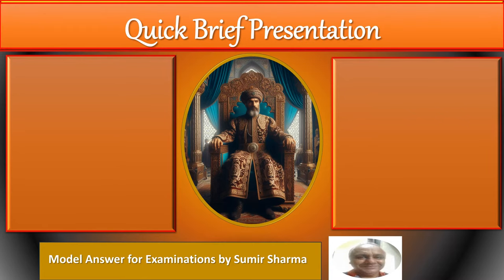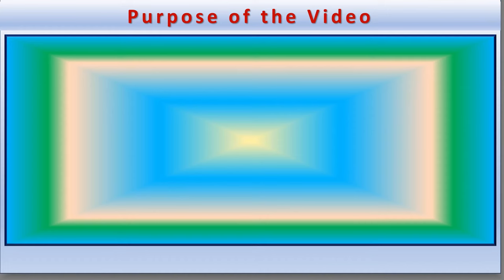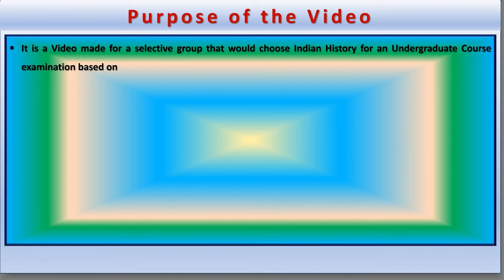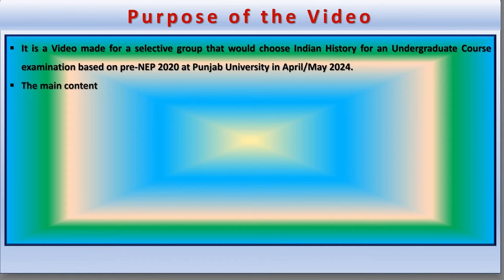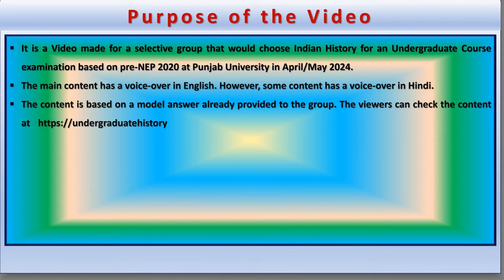This is a quick brief presentation in question and answer format on Balban's blood and iron policy. The video is made for a selective group choosing Indian history for an undergraduate course examination based on the pre-New Education Policy 2020 at Punjab University in April/May 2024. The content is based on a model answer available at undergraduate history dot blogspot dot com slash 2024 slash 02 slash balban dash model dash answer dot html.